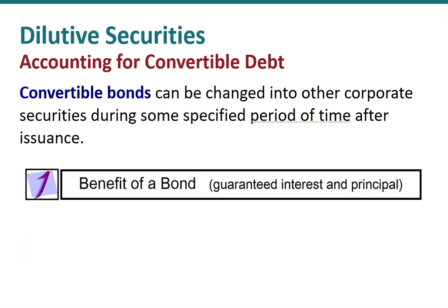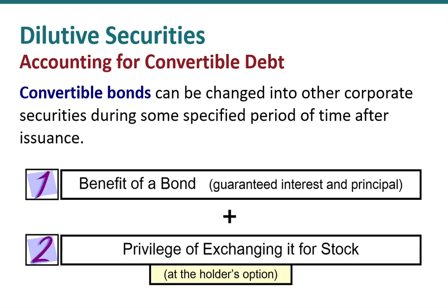From the bondholder's perspective, the benefit of a convertible bond is that we get the guaranteed principal and interest — that is, if the company doesn't default — plus the added benefit of being able to exchange it for stock. In other words, we have an upside, something more than the par value of our bonds at maturity.